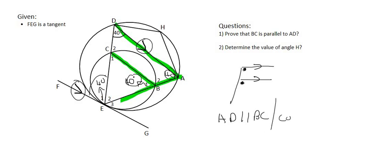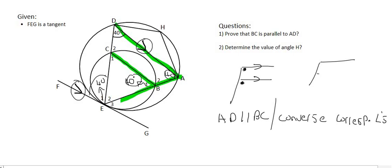We can say that AD is parallel to BC, and the reason for that is converse. Remember, converse means the other way around. Converse of corresponding angles. Because normally they would tell you that these lines are parallel, and then you would be able to say that those two angles are equal. However, in this example, we first showed that these two angles are equal. And so because of that, the two lines must be parallel.